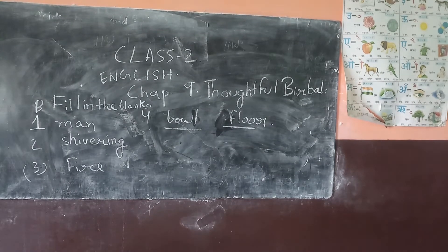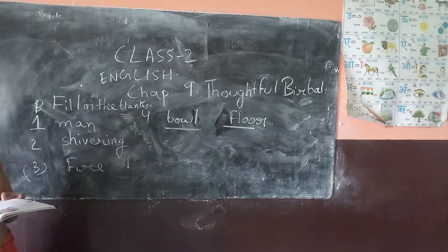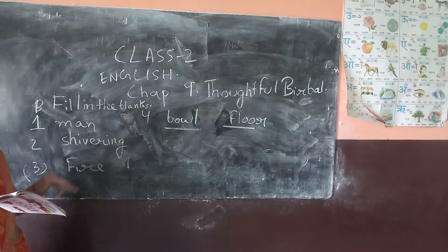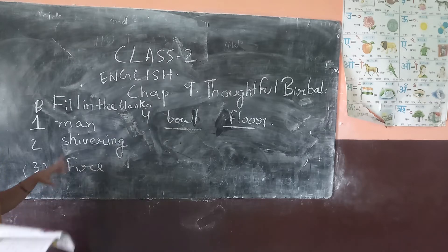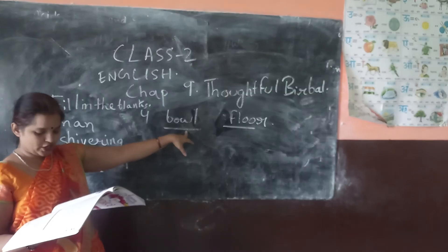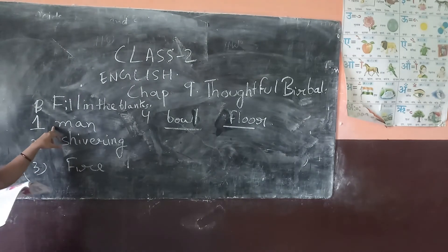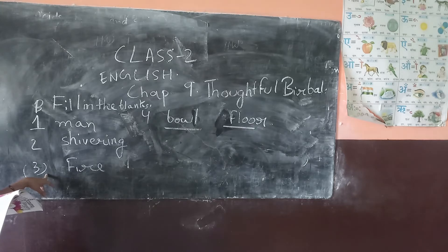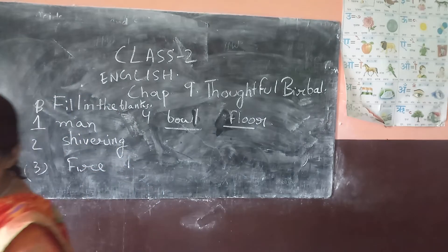Let's do the next one: fill in the blanks. The man entered the lake. The first one. Second one: the man was shivering. Third one: there was a fire burning at a distance. Fourth one: a bubble of Hitchery was kept on the door. The answers are: first one is man, second one is shivering, third one is fire, fourth one is bowel and flow. This is the fill in the blank.